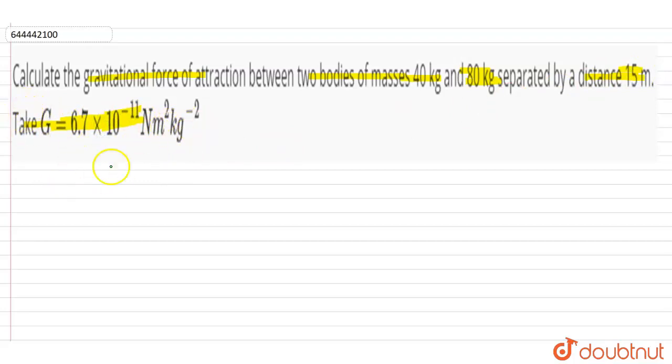So here in this question, there are two masses given. One mass is m1, and this m1 mass is equal to 40 kg. There is another mass which is m2, and this m2 mass is 80 kg.